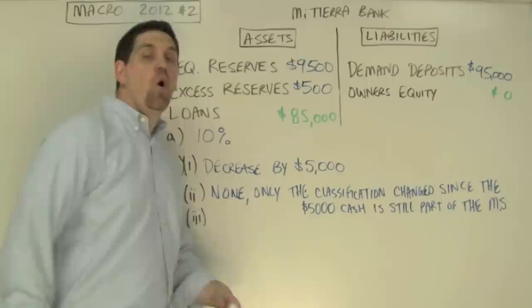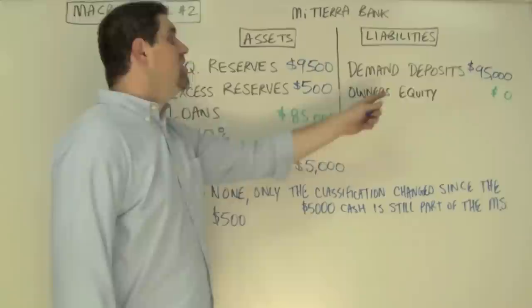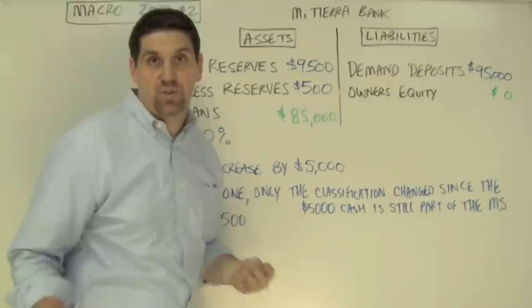The last part of B asks what is the new excess reserves for this bank after the withdrawal of $5,000. The answer is $500. After the money was taken out, the bank doesn't need to hold $10,000 in reserves anymore — all they have to hold is 10%, which is $9,500. So the other $500 is excess reserves.